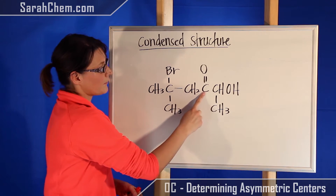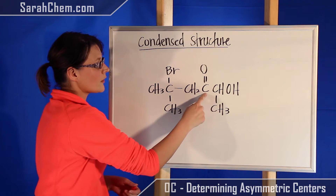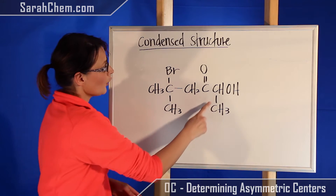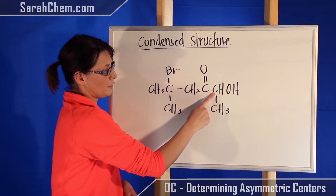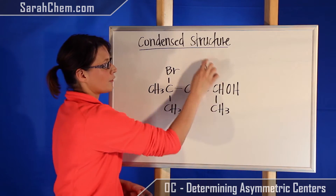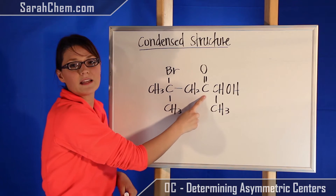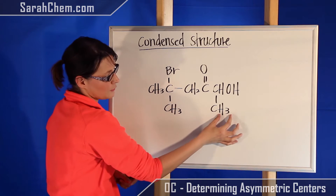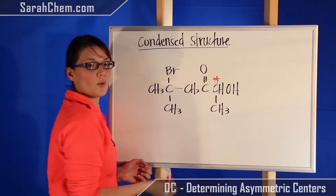I look at this carbon — now this is another one that sometimes sneaks in and people mark it as an asymmetric center. The issue with it though is it's sp2 hybridized, so it also cannot be an asymmetric center. Over here I take a look at this carbon. This carbon is sp3 hybridized and it does have four different groups: it has hydrogen, the OH, the methyl, and this entire group. When figuring out asymmetric centers, you want to look at the whole group, not just the immediate attachments. Though this is a carbon and that is a carbon, they're not the same because this has three H's and this has this whole group attached. So this carbon here would be an asymmetric center.